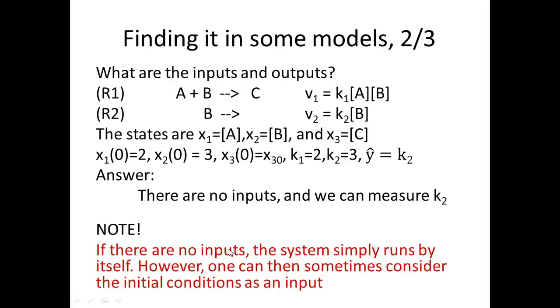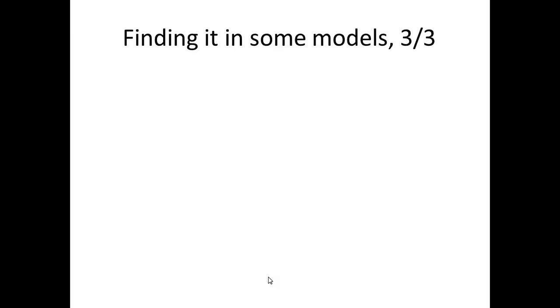No inputs and we can measure k2. If you have a situation like this where you have no inputs, the system simply runs by itself. You are not controlling it in any way. But in some cases, depending on the system and on the experimental setting, you can still consider the initial conditions as a sort of input, because the concentration that you have of this A, B, and C could be something that you add to the system and then you let it run by itself. So the initial conditions can be considered as a sort of input, depending on how the system is structured.